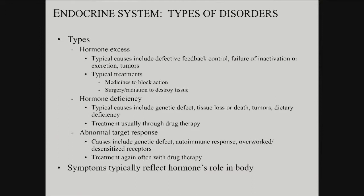You can get deficiencies as well — could start from a genetic defect where you can't make the hormone, tissue loss or death, tumors also, or dietary deficiency. Iodine, for example, is required for thyroid hormone production. And in many cases you can simply supplement. This can get pretty complicated if it's a pituitary tumor that you take out — those patients are on enormous cocktails of five, six, seven, or up to a dozen different hormones and compensatory strategies. But if it's pretty simple, just loss of thyroid tissue, you can replace with oral thyroid hormone.